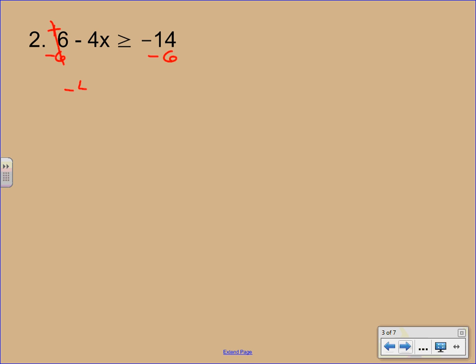Be real careful when you bring things down too here. There is a negative in front of that 4x. So you do need to bring down that negative sign. Bring down the inequality. And then again, note that there's a negative in front of the 14. Sometimes students miss that. So when you combine a negative 14 and a negative 6, you get a negative 20.